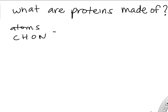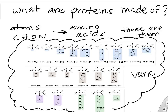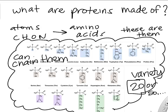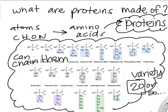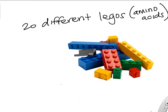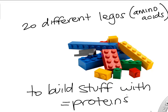What are proteins made of? Starting at the atom level, we have carbons, hydrogen, oxygen, and nitrogen arranged into about 20 different amino acids. If you look at amino acids, they each have a slightly different structure but are basically a carbon, hydrogen, oxygen, nitrogen chain. You arrange different amino acids and you get a different protein. Think of amino acids like legos — you have about 20 to 22 different legos to build all your proteins with.